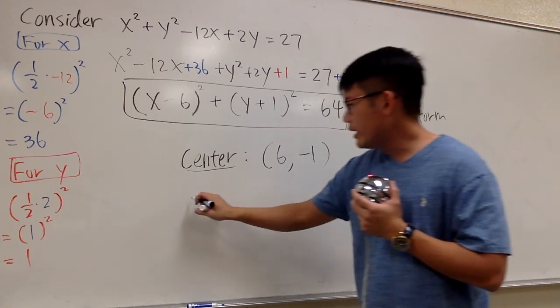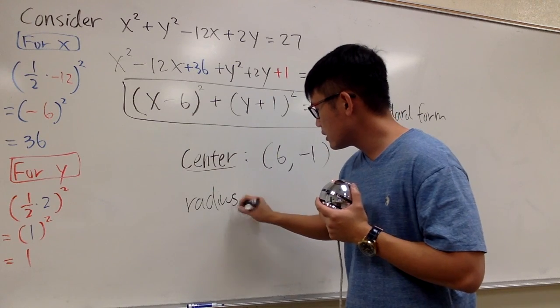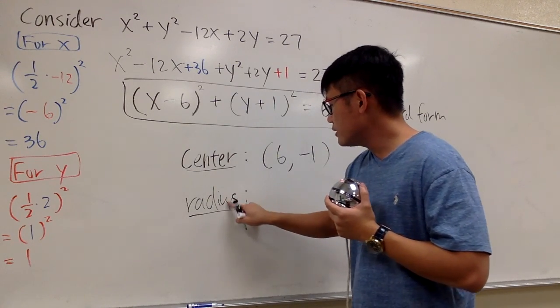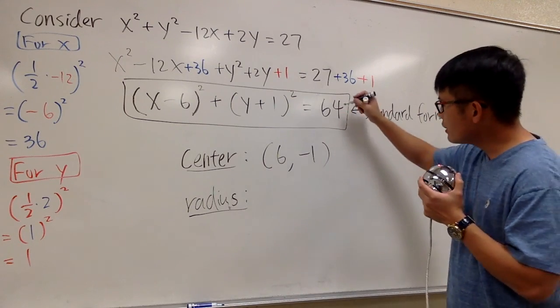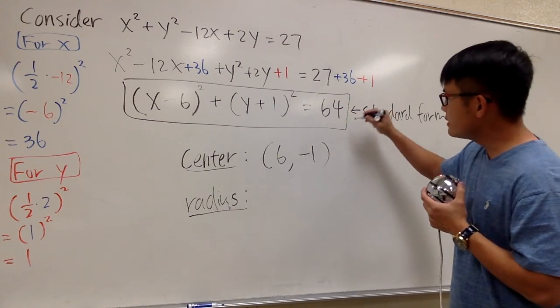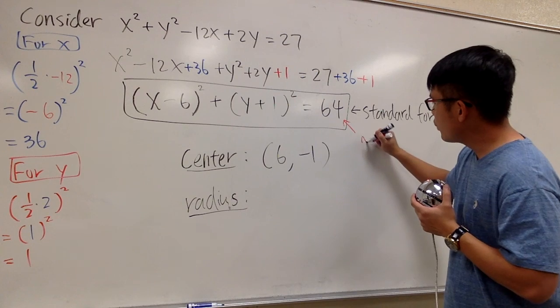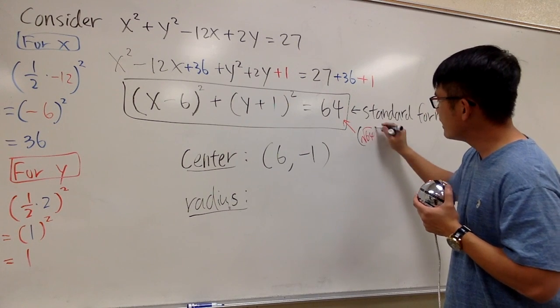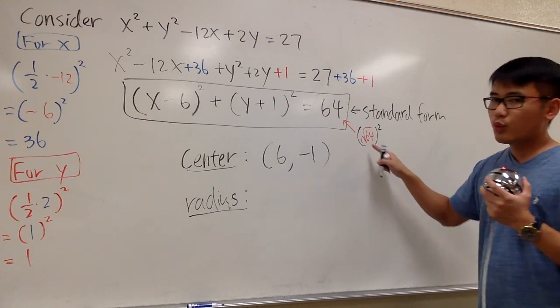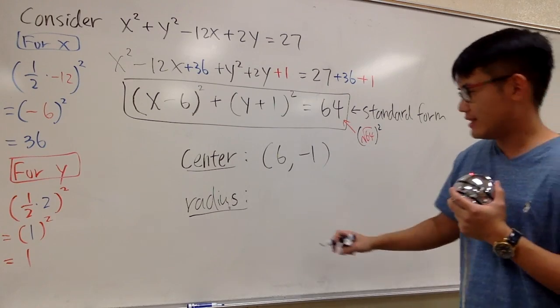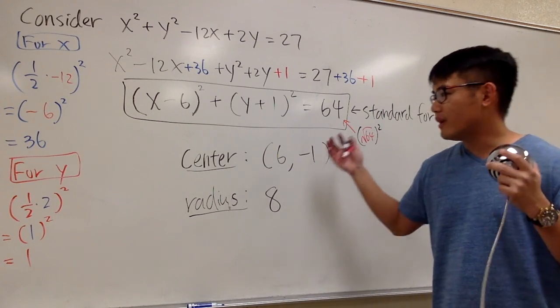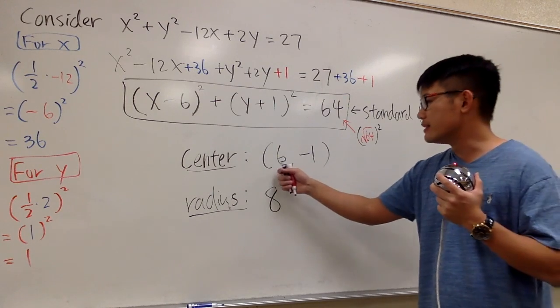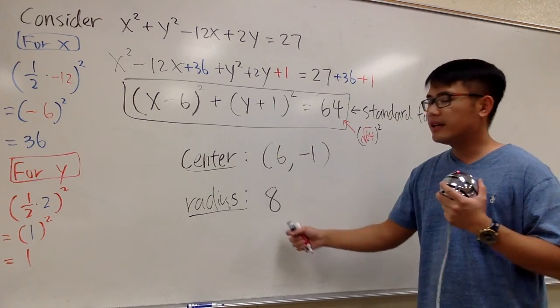And then for the radius, look at this. This is 64, but then don't look at 64 as 64. Look at 64 as square root of 64 and then square. And we know square root of 64 is 8. So the radius is actually 8. And now we have the information, the center is 6, negative 1, and the radius is 8.